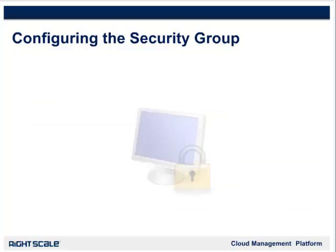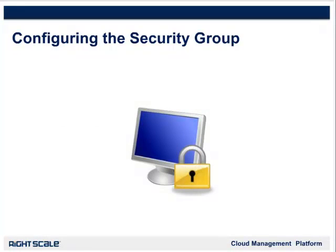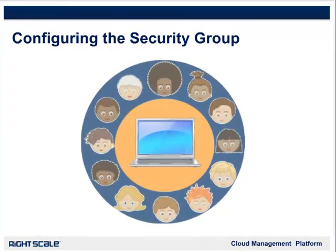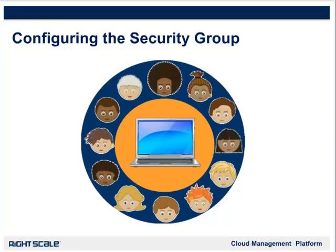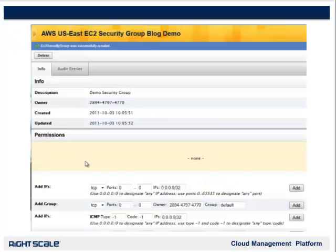As mentioned, a Security Group is configured to provide absolutely no access to any client, whether by IP — the address someone's computer is coming in from — or by service, such as web browsing. Since the goal of our demo is to have a WordPress blog running in the cloud, let's configure our Security Group so that anyone can see our blog. Think of anyone as meaning they could be anywhere in the world, from any internet address or IP. Since our WordPress blog is a web application that people will browse to using Firefox, Safari, or another web browser, we want to grant access for web browsers to see the blog. To do this, we are going to change one line in the Permissions field and press Add.